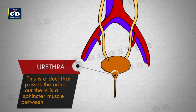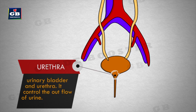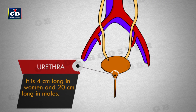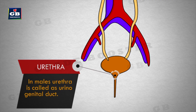The urethra is a duct that passes the urine out. There is a sphincter muscle between the urinary bladder and the urethra. It controls the outflow of urine. It is 4 centimeters long in women and 20 centimeters long in males. In males, the urethra is also called the urinogenital duct.